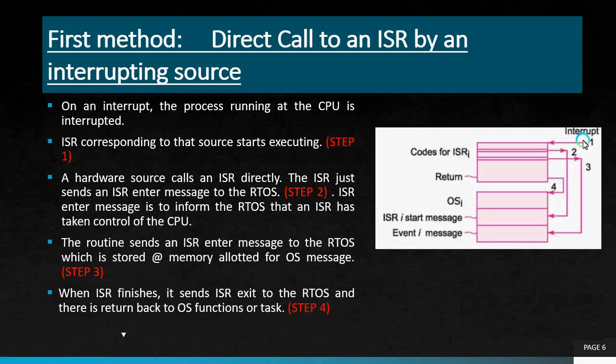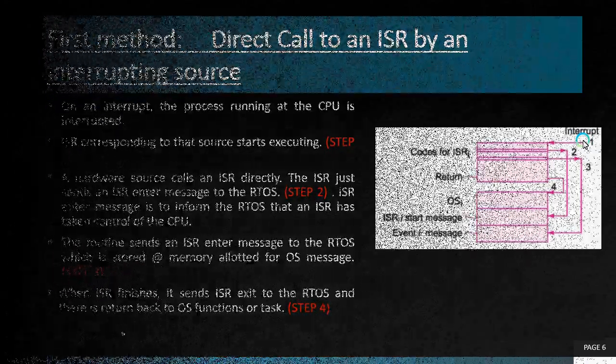In the figure, each step is represented by a corresponding number. A hardware source calls an ISR directly. In step 2, the ISR sends an 'ISR enter' message to inform the RTOS that the ISR has taken control of the CPU. This ISR enter message is stored in the memory allocated for the OS — that is step 3. Finally, when the ISR finishes, it sends an exit message to the RTOS and returns back to OS functions or the task.